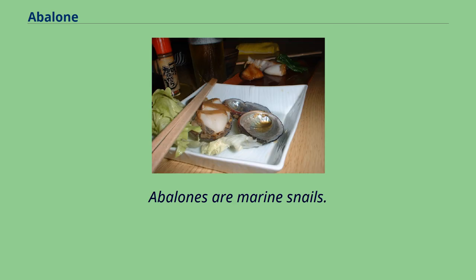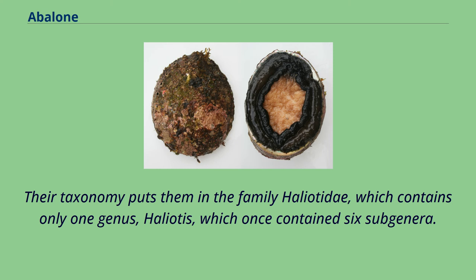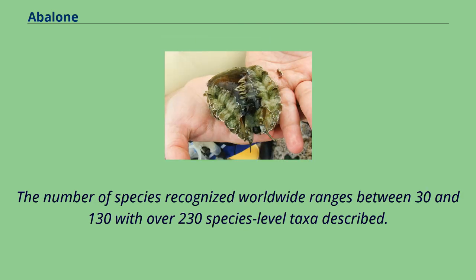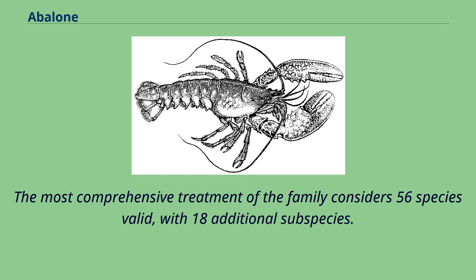Abalones are marine snails. Their taxonomy puts them in the family Haliotidae, which contains only one genus, Haliotus, which once contained six subgenera. These subgenera have become alternate representations of Haliotus. The number of species recognized worldwide ranges between 30 and 130, with over 230 species-level taxa described. The most comprehensive treatment of the family considers 56 species valid, with 18 additional subspecies.